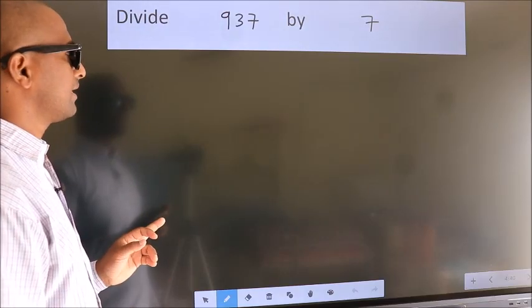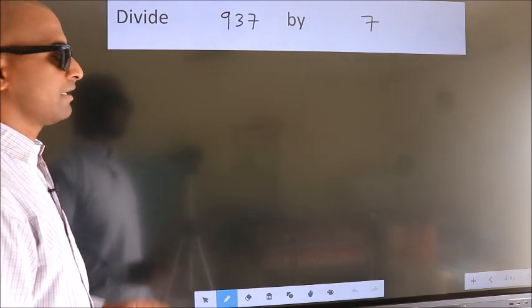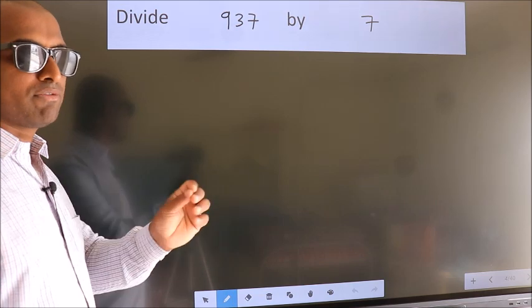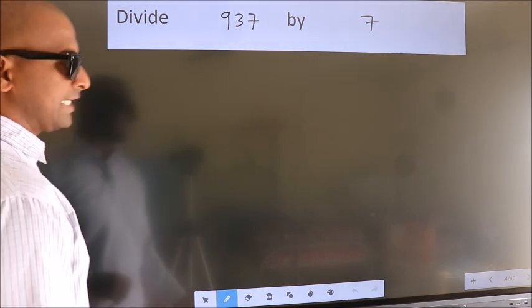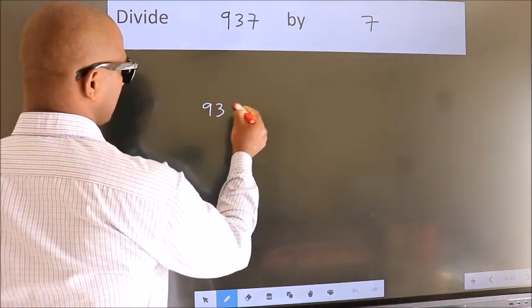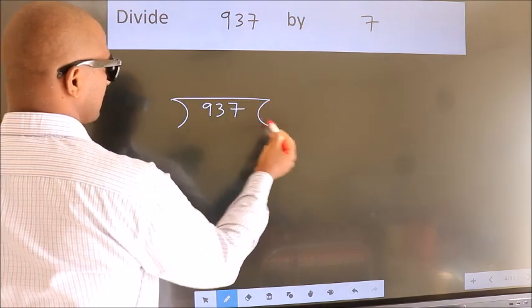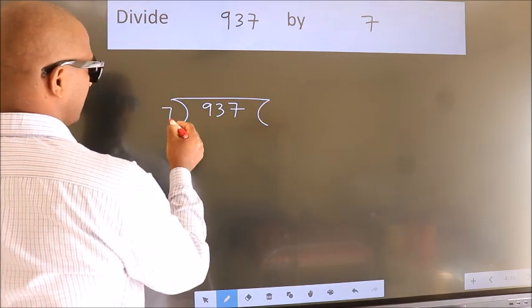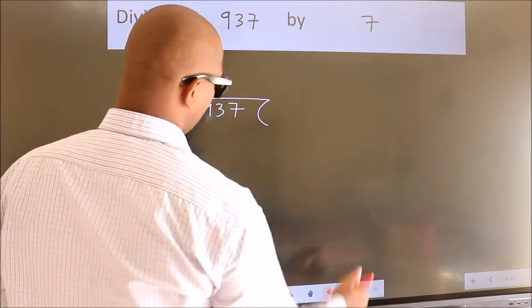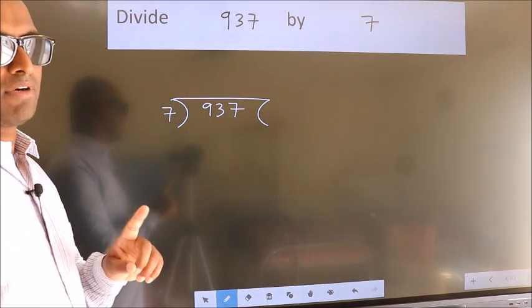Divide 937 by 7. To do this division, we should frame it in this way: 937 here, 7 here. This is your step 1.